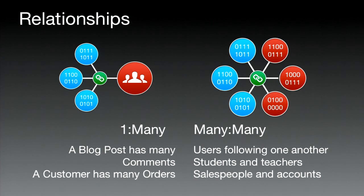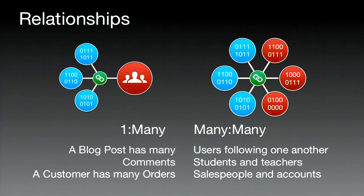A one-to-many relationship — for example, a blogging application where each blog post has many comments. That's a one-to-many relationship: one blog post can have many comments, but one comment can only belong to one parent blog post. Another classic example: a customer can have many orders, but a given order can only belong to one customer.